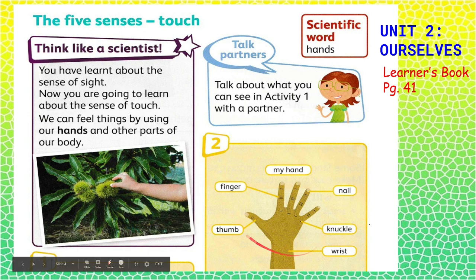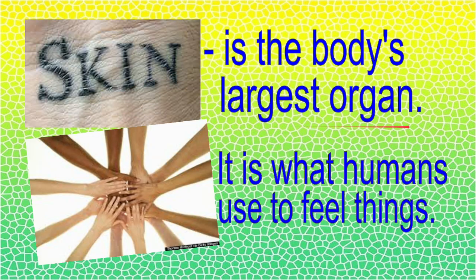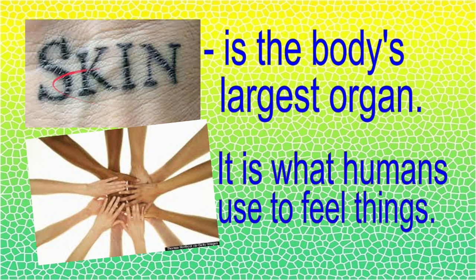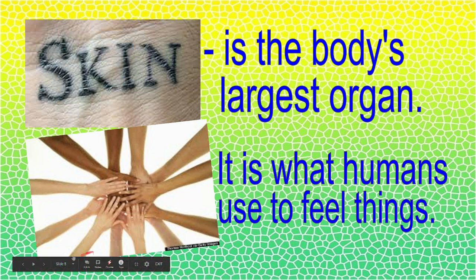This is your hand and these are the parts of the hand. As today we will talk about the sense of touch. Skin is the body's largest organ — it is what humans use to feel things. Although most people associate touch with hands and fingers, we have sensory receptors on all areas of our skin. This means we can feel things with our skin such as textures and how hot or cold things are. The skin also has other important roles.